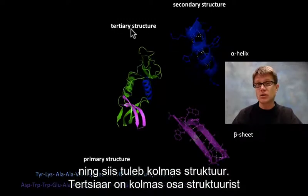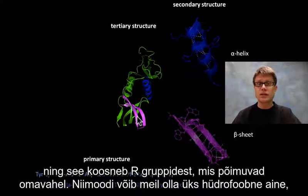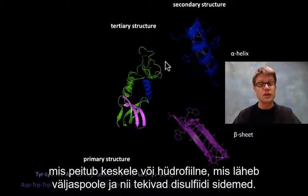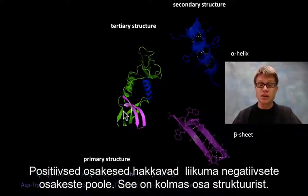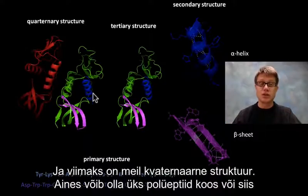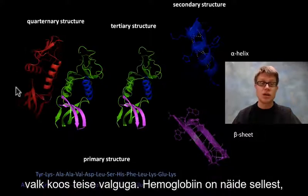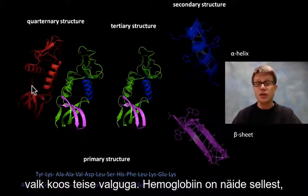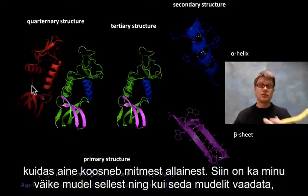Then we have the tertiary structure — the third level of structure — which is all those R groups interacting. Some are hydrophobic and hide to the middle, some are hydrophilic and fold to the outside, and we'll have disulfide bonds and positive attracting to negative. Finally we have quaternary structure, which is when one protein combines with another protein. Hemoglobin is an example of that, made of a number of different subunits.